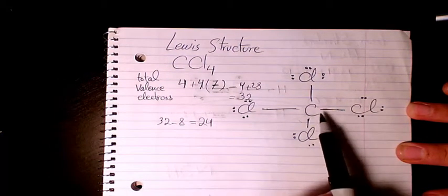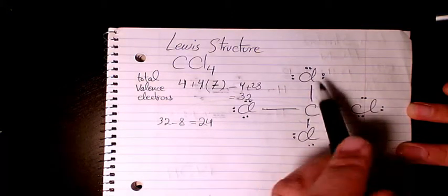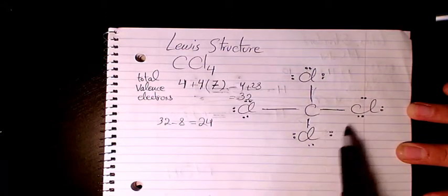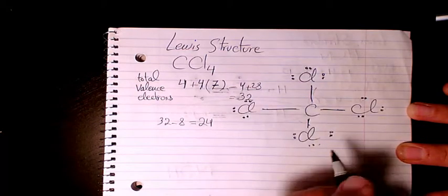For carbon we have two, four, six, and eight electrons, so it's valid. Chlorine, we have two, four, six, and eight; two, four, six, and eight; two, four, six, and eight; and two, four, six, and eight. So that's valid.